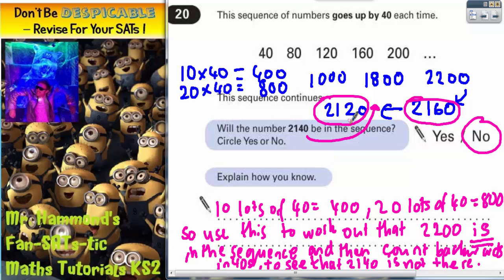So all we've done is we've said instead of keep adding on 40 loads and loads of times, we'll add on 20 lots of 40, which we've worked out as 800, to get straight to 1,800. Then we'll add on another 10 lots of 40 to get straight to 2,200, which we know is definitely in the sequence. And then just count backwards in 40s to see that 2,140 is not there. It's been skipped out.